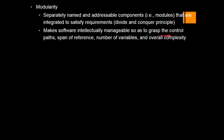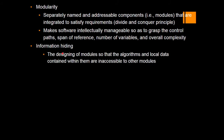This divide and conquer principle makes software intellectually manageable — it helps grasp control paths, span of reference, number of variables, and overall complexity. If an error occurs in one module, the user can locate where the problem occurred. Span of reference shows how each module is referenced by others, how errors affect dependent modules, and how variables are declared across modules. Modularity helps manage all of these concerns.